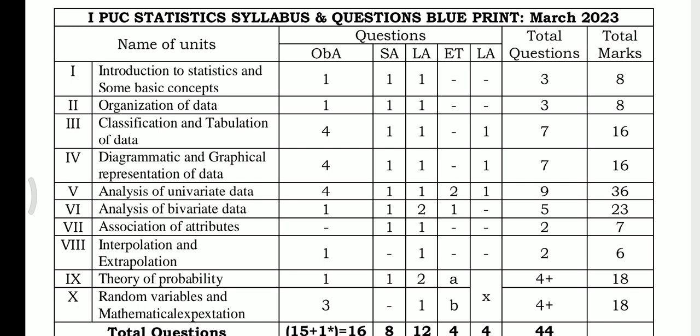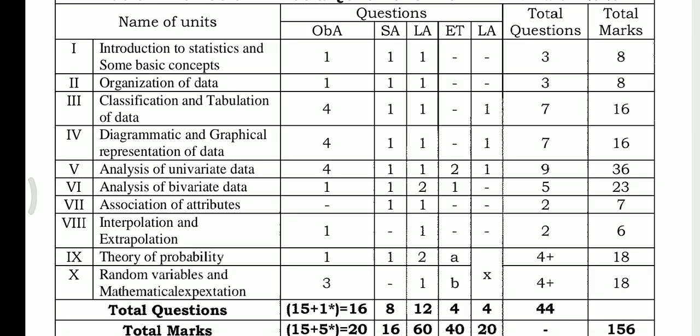This is purely meant for first year PVC students, statistics subject blueprint. Chapter 1 carries 8 marks total. The second chapter, organization of data, also carries 8 marks.